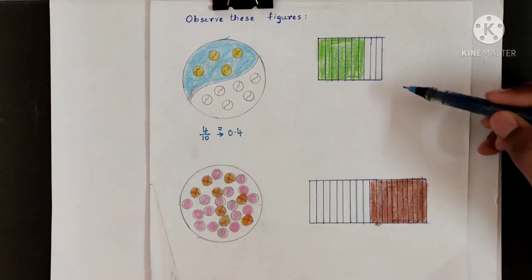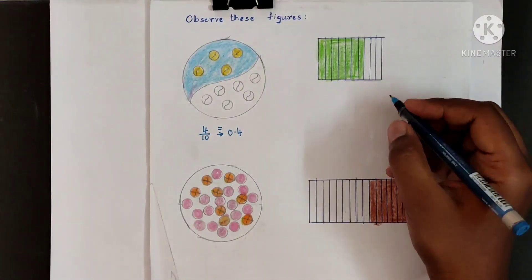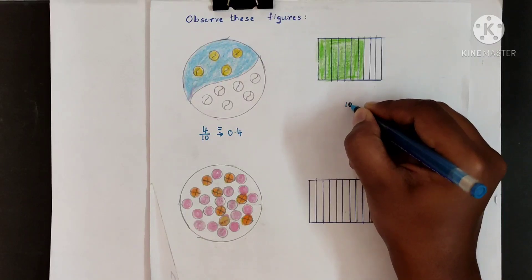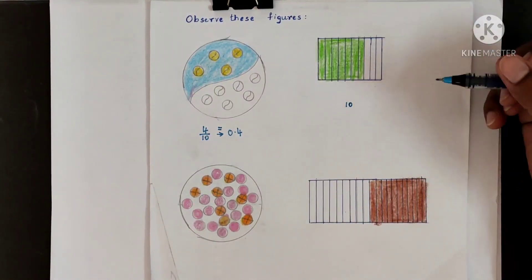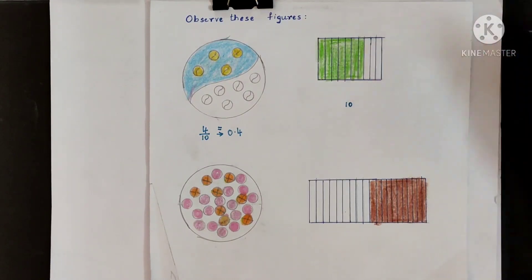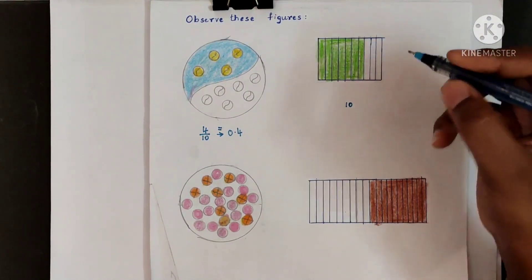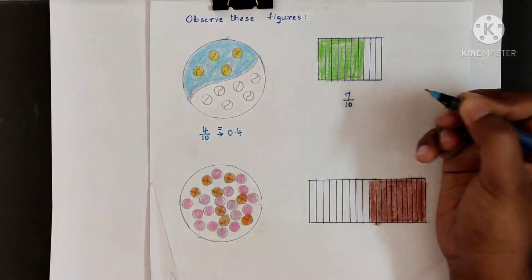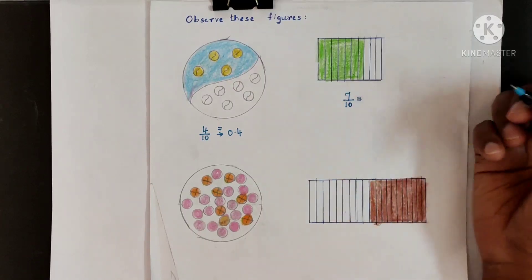Same way, now look at this ribbon. This ribbon has been divided into 10 equal parts. What is the fraction for the shaded portion? You can see that parts 1, 2, 3, 6 and 7 are shaded. So 7 out of 10 parts, or 7 tenths, are shaded.